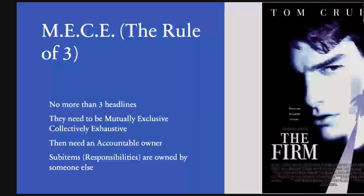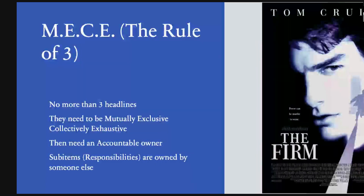What does this look like? You've got a whole list of things that need to get done. Can you put these things into three distinct groups? Can you give them headlines? Can you make them mutually exclusive, collectively exhaustive — i.e., they don't have anything to do with each other, every single item belongs in a group and doesn't cross over into one of the other groups. Can you make one person accountable for each of these headlines, and can you get some items going — things that need to get done — that that person will farm out and get help with?